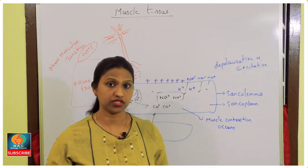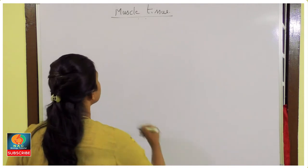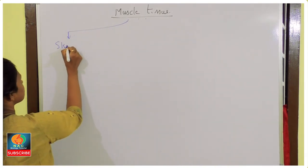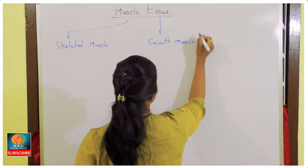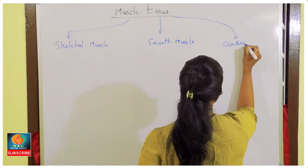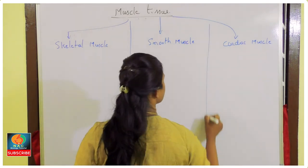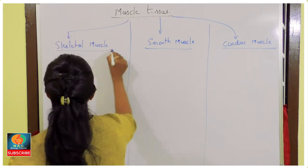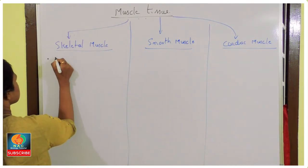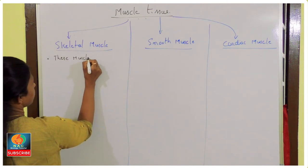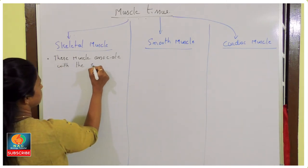Muscle tissue can be classified into three types: skeletal muscle, smooth muscle, and cardiac muscle. Skeletal muscles, as the name indicates, are associated with the skeleton. They are generally cylindrical and unbranched.